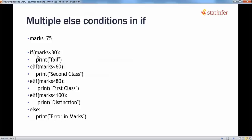In this example, mark is 75. If the mark is less than 30, which is not the case, it will print 'fail' — but that's false so it moves to the next elif: mark is less than 60, print 'second class' — also not the case. It moves to the next elif: mark is less than 80. Yes, this condition is true, so it will print 'first class'. Once any elif statement is executed, it will move out of the whole elif-else block.